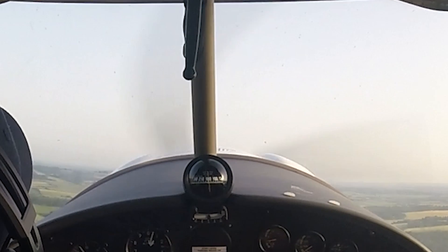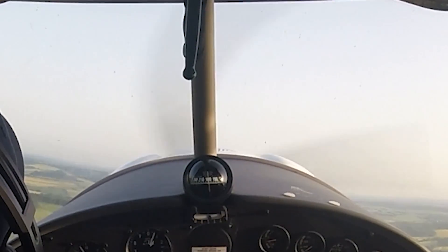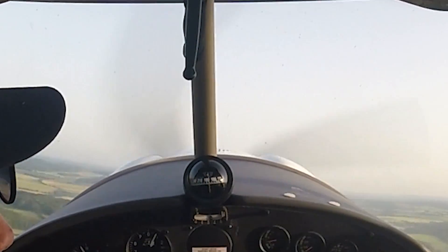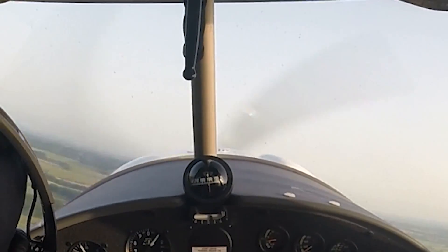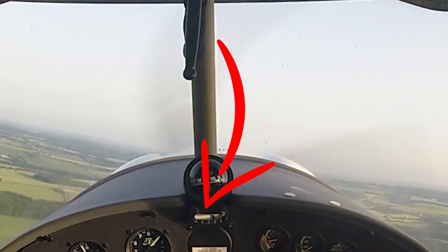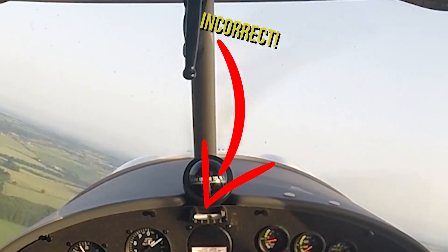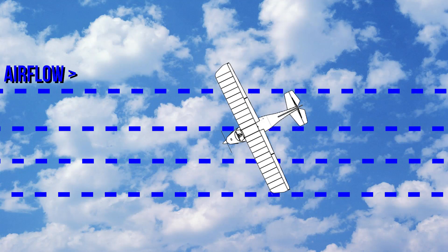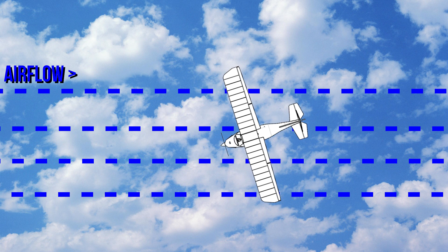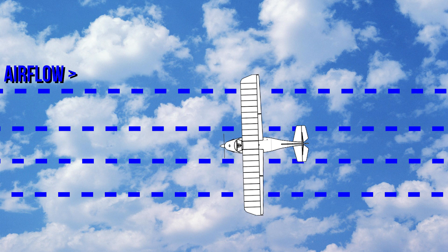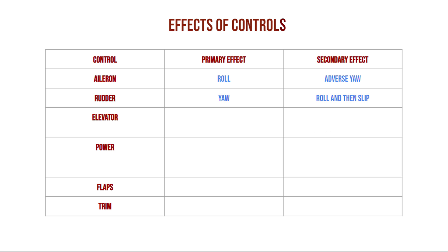In most aircraft you will have a spirit level looking thing, known as a slip indicator. We will use this to check that we are flying in balance. All this means is that the airflow is parallel to the longitudinal axis. Use small amounts of rudder to correct the adverse yaw when rolling.